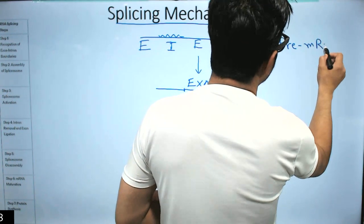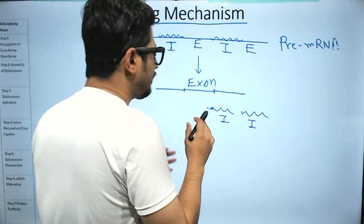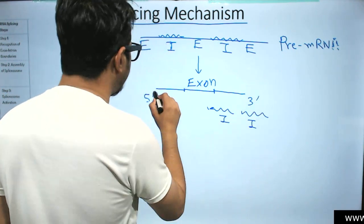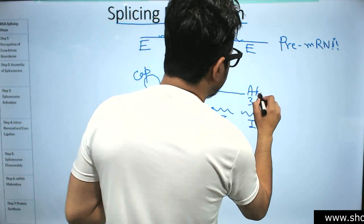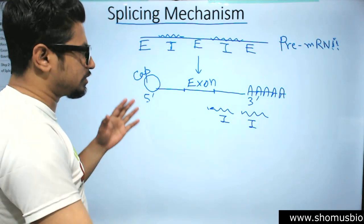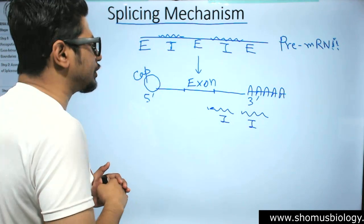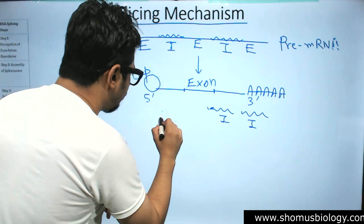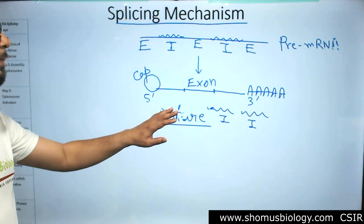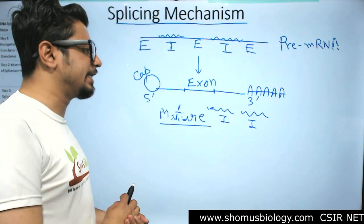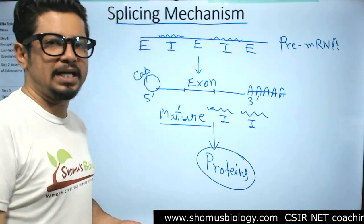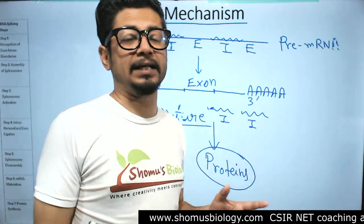This is the pre-mRNA transcript. After splicing is done, this is the spliced-out RNA. It should have a 5' cap and polyadenylation at the 3' end. This RNA with spliced-out introns, only exons joined together, a 5' cap, and 3' polyadenylation is called mature mRNA. This mature mRNA will be utilized for further processes like translation, making proteins in eukaryotes.